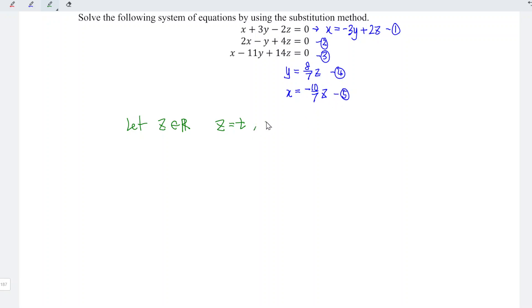Let's say z is equal to t, and recall equation 4 and equation 5, so which means that x is equal to negative 10 over 7t and y is equal to 8 over 7t, and hence we're done.